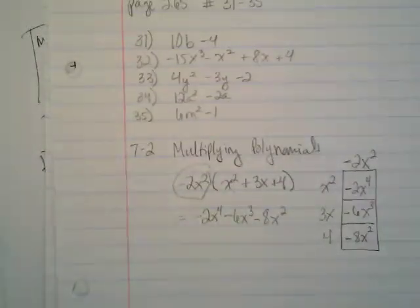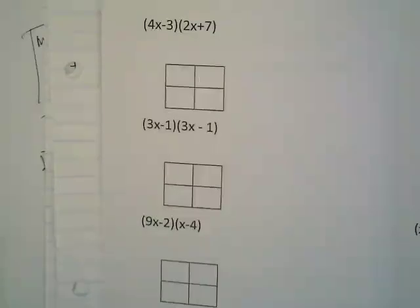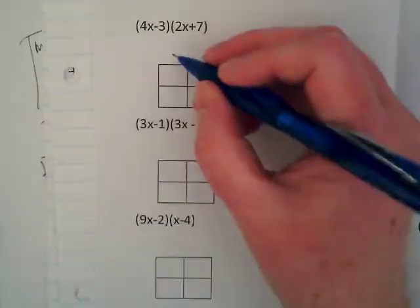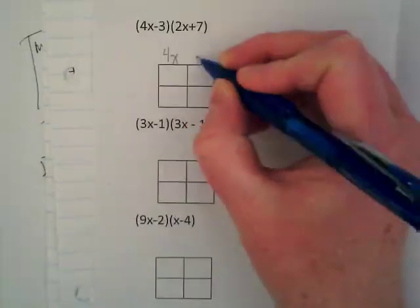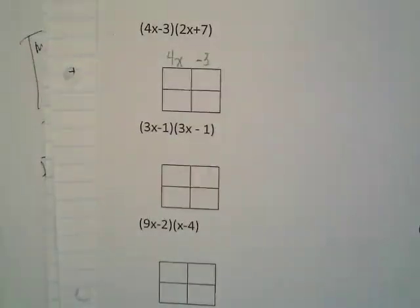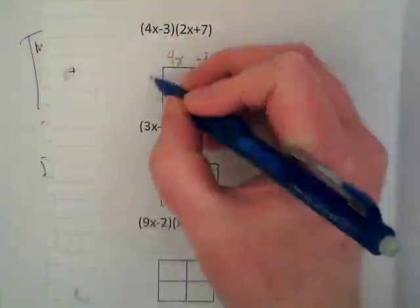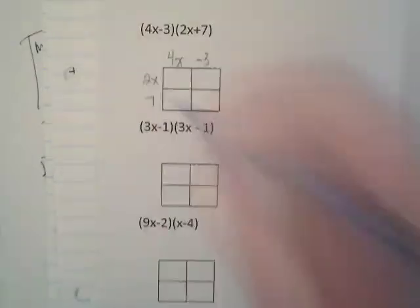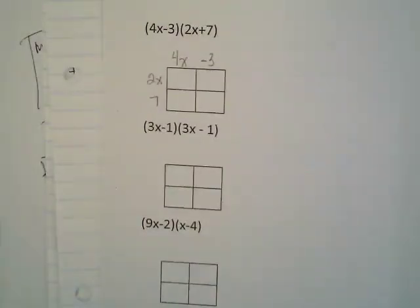So I'd like us to now open this up. The boxes are made for us. We are going to start with 4x - 3 times 2x + 7. It doesn't really matter, but I like to write the first one on the top, and each term goes above a box, keeping the sign with it. And I like to write the second one down the side. I'm looking at the right side, and the person who made this does it the opposite, but that's okay.